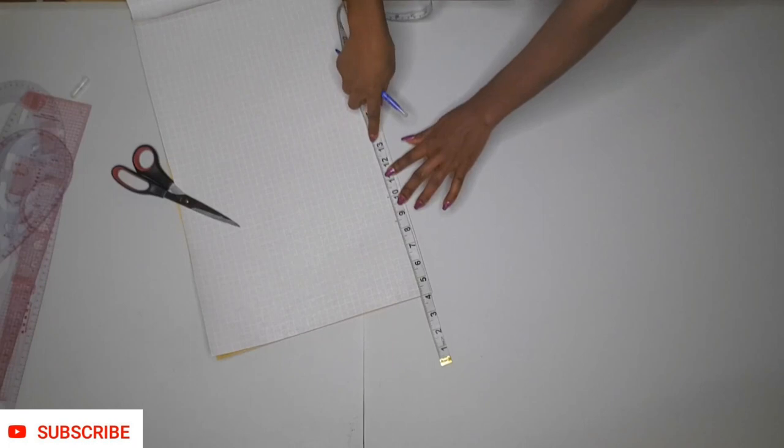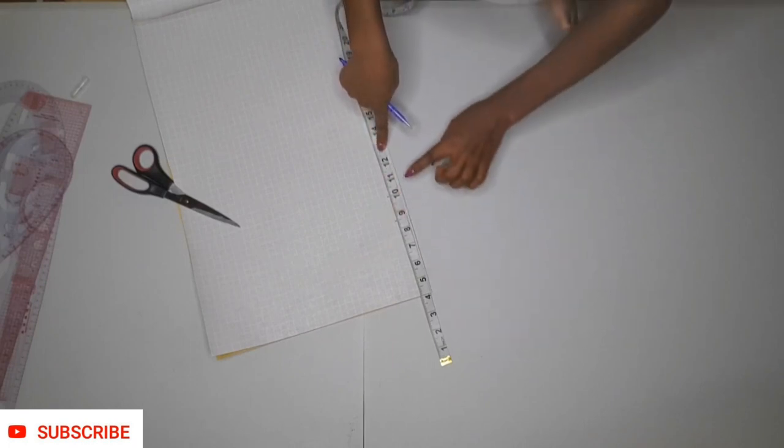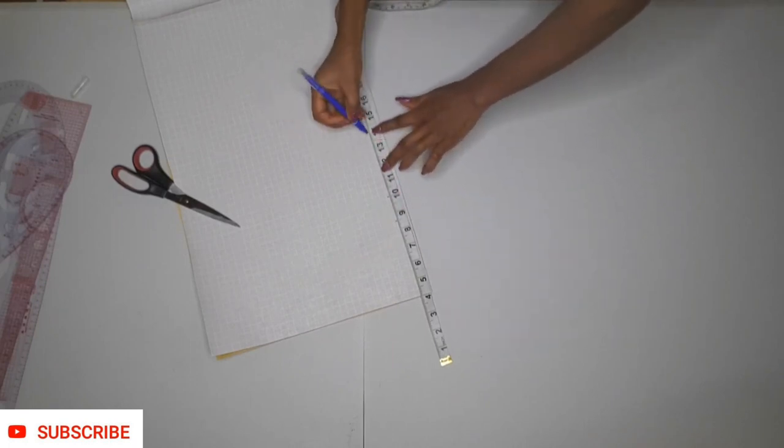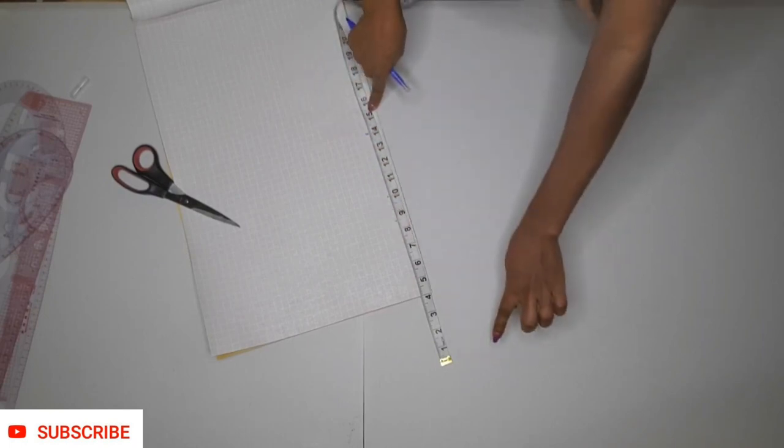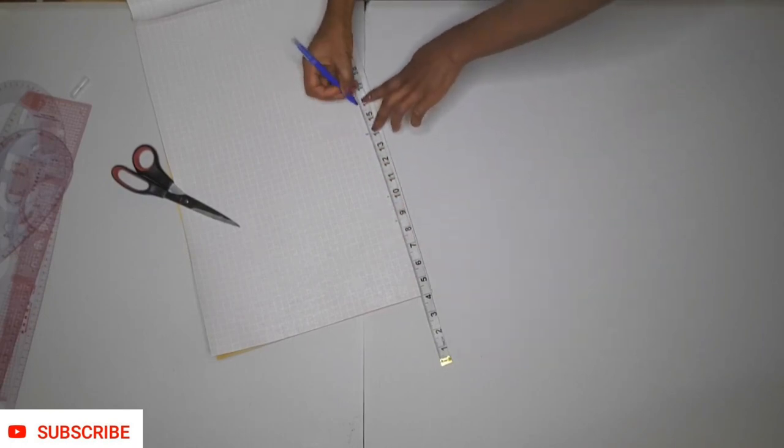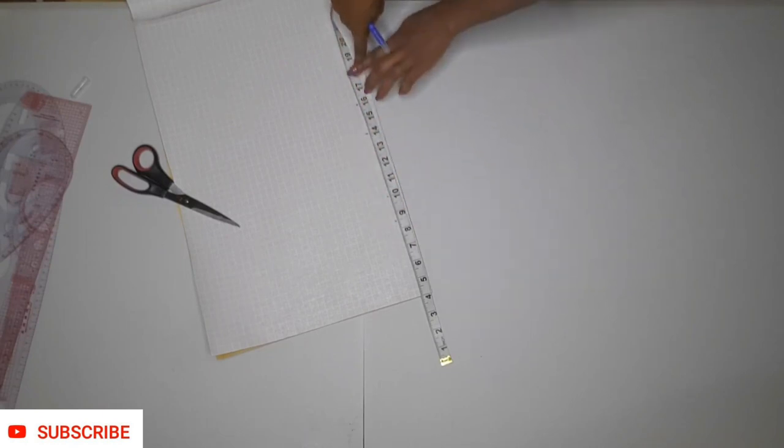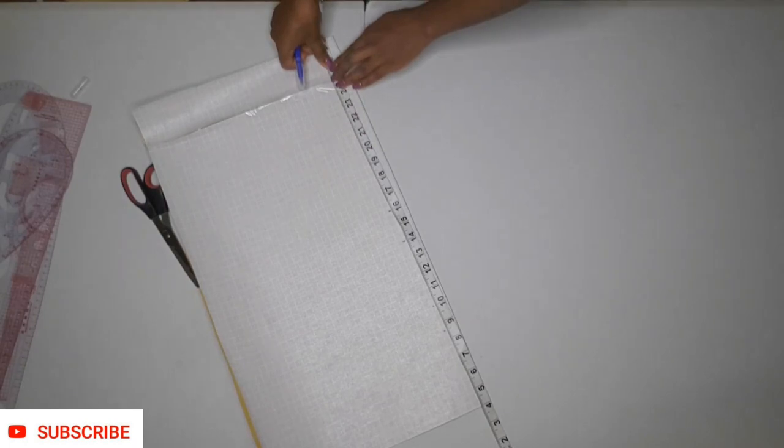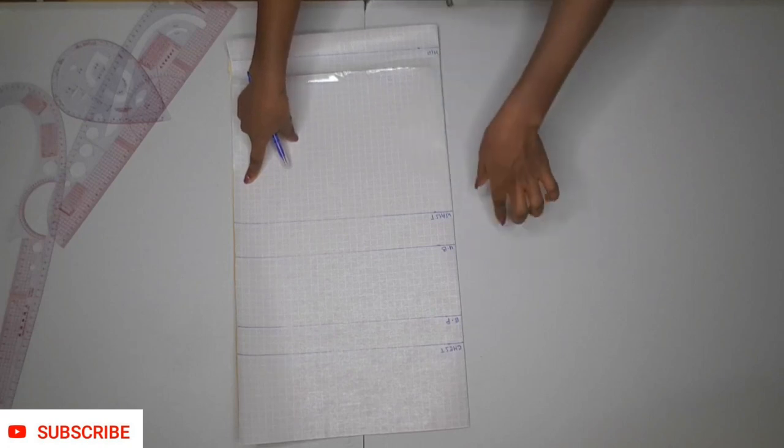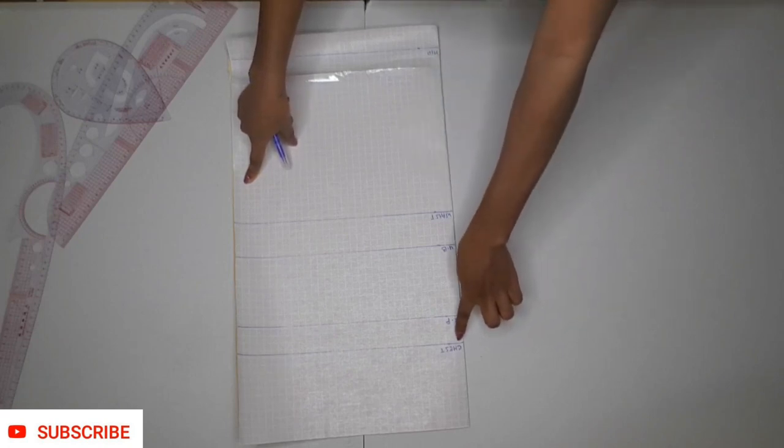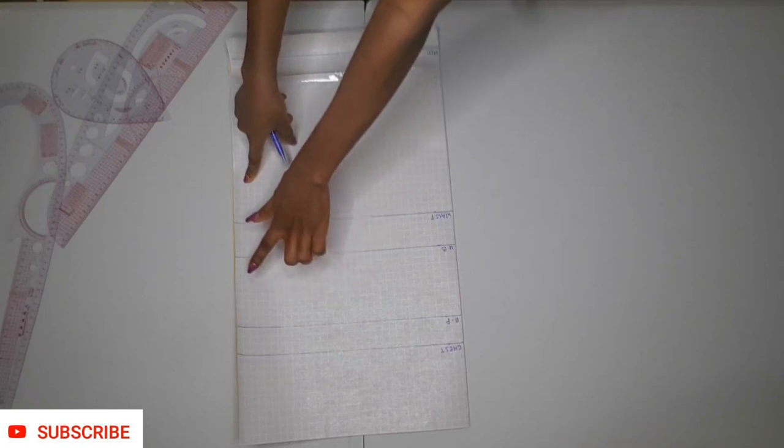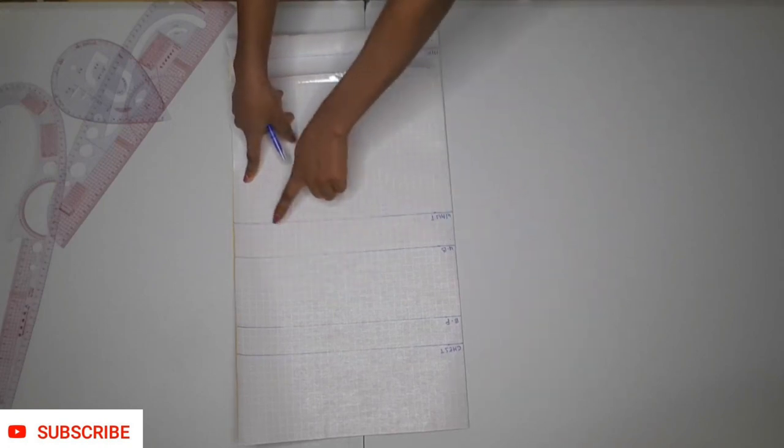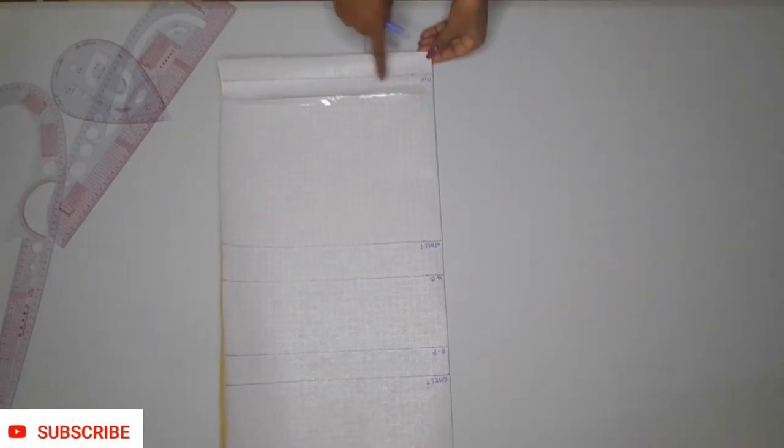Next, shoulder to underburst, that's 14 inches. Next shoulder to waist is 16, and I'm marking that as well. Next is my shoulder to hip, and I'm marking that as well. I'm going to be connecting all of this into a horizontal line. This is my chest line, the bust point, the underburst, the waist, and the hip line.